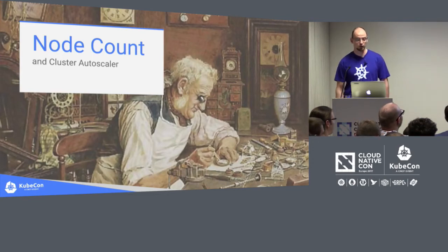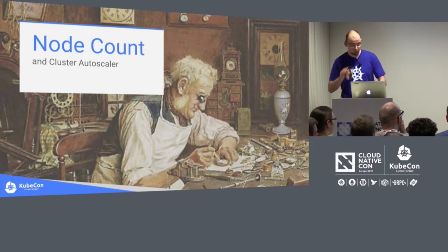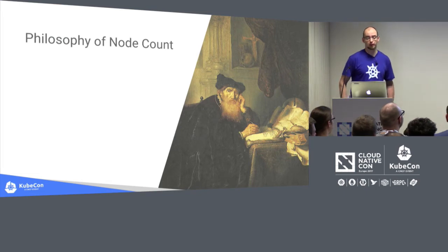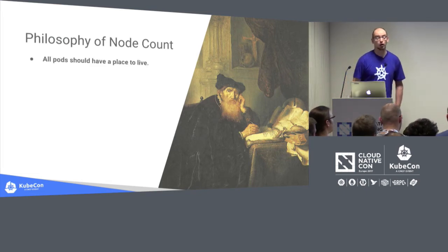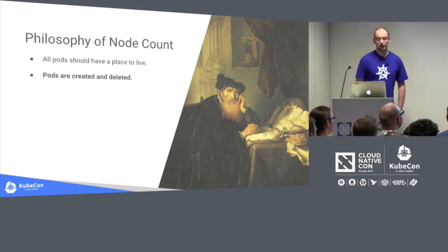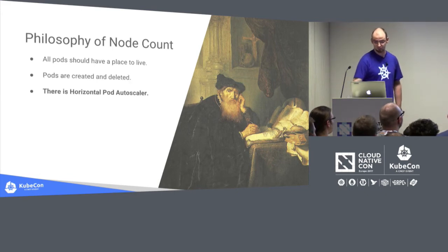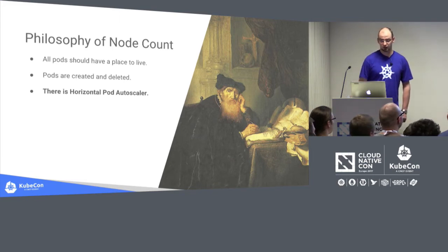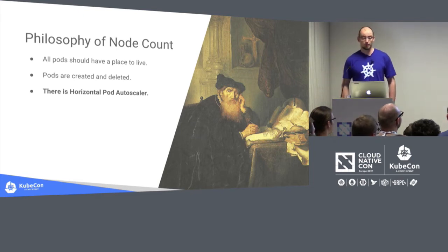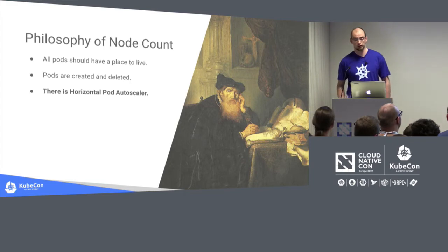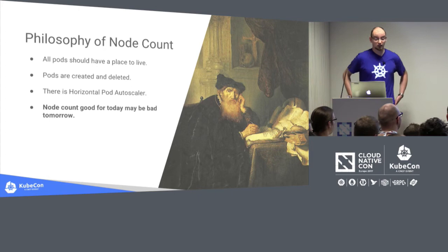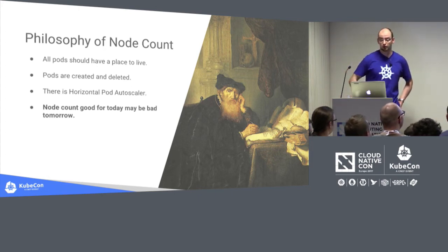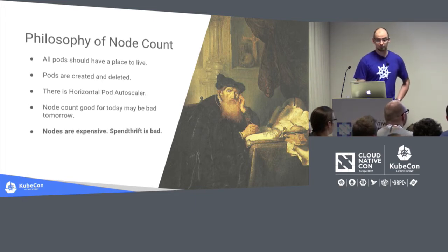Now let's focus on the number of nodes in the cluster. Setting the proper number of nodes is quite complex — it's almost a philosophical problem. All pods should have a place to live, and pods are created and deleted so the need for nodes changes over time. As discussed, horizontal pod autoscaler changes the number of pods, so node count should follow HPA activity. If new pods are needed to handle traffic, the node count may have to be increased so the new pods have a place to run. The right node count today may be wrong in an hour or 10 minutes.